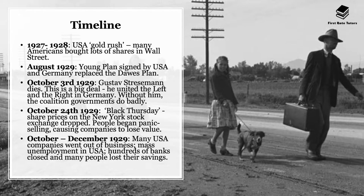The same Americans who had bought lots of shares in 1927–28 started panicking in 1929 and began selling, causing companies to lose value even faster. Between October and December 1929, many US companies lost value and ultimately went out of business. These companies employed lots of people, so there was mass unemployment in the USA. Hundreds of banks closed, many people lost their savings, and a number of people also committed suicide as a result.